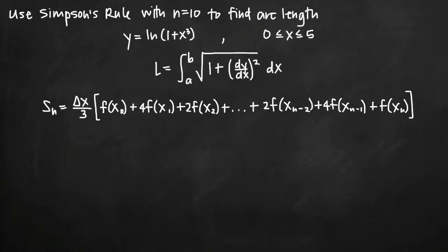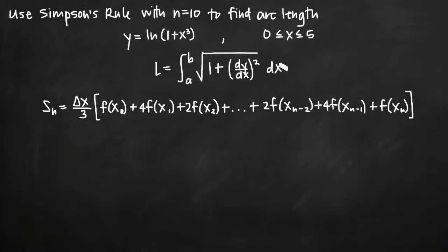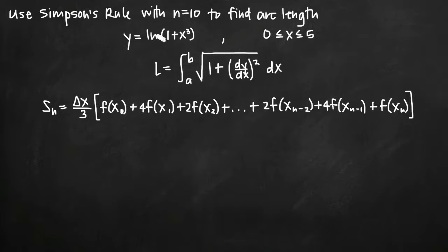Today we're going to be talking about how to use Simpson's rule to find arc length of the function y equals the natural log of 1 plus x cubed. We've been told to use Simpson's rule with n equal to 10, and the interval on which we're finding arc length is x greater than or equal to 0 and x less than or equal to 5. We could use the arc length formula for L to find exact arc length, but in this case we've been asked to approximate it using Simpson's rule.